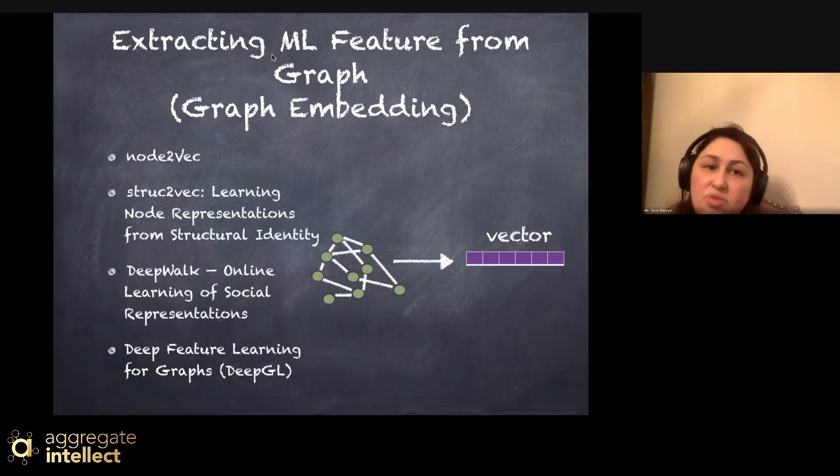There are famous graph embedding techniques. Node2Vec converts nodes to vector. Struct2Vec is learning node representation from the structure of the graph. DeepWalk is one of the newer techniques that uses online learning of social representation. And something during the search for this workshop I came across, it's called Deep Feature Learning for Graphs or DeepGL. It's a recent technique for graph embedding.